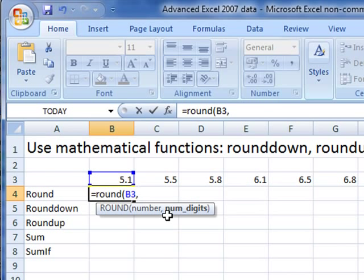So I'll just put the comma in and then the number of digits. How many digits do I want to round this number down to? How many decimal places in effect? I don't want any decimal places.